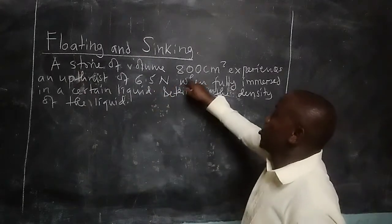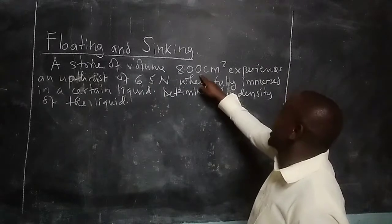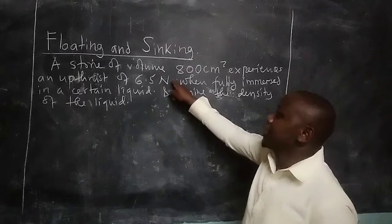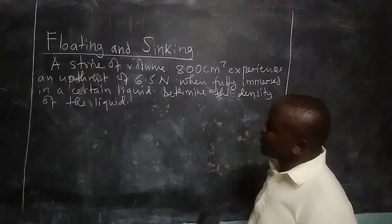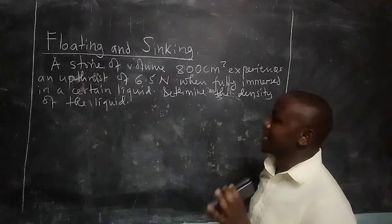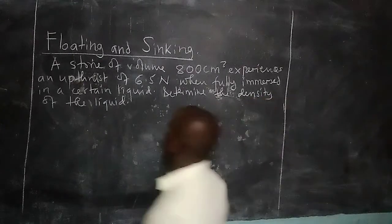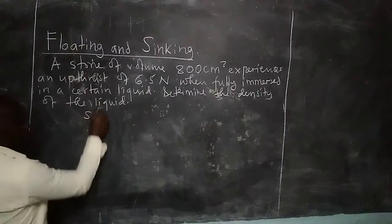We are given a stone, volume 800 cubic centimeters, experiences an upthrust of 6.5. So it is very important to see that the upthrust is equal to the weight of liquid displaced in the solution.